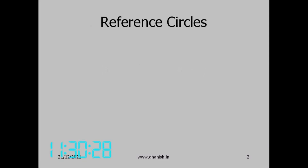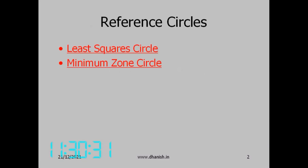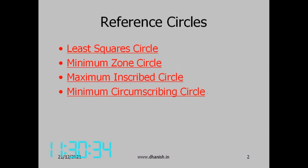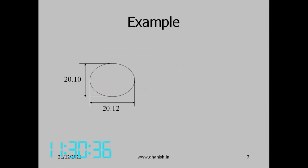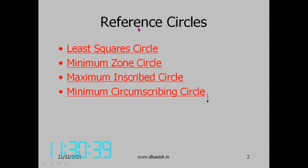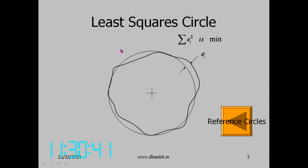For roundness we have four reference circles: least squares circle, minimum zone circle, maximum inscribed circle, and minimum circumscribing circle. The least squares circle is the circle such that the sum of the squares of the deviations from the circle is minimized.